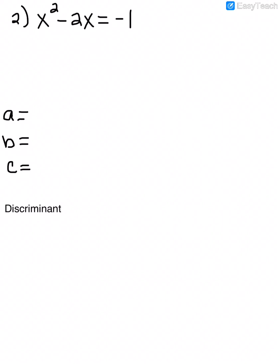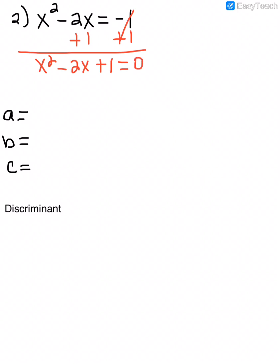Here's another one. This equation is not in standard form, so to get it in standard form, everything needs to be on one side in descending order. Moving the 1 over gives x squared minus 2x plus 1 equals 0. So a, the coefficient of x squared, is 1; b is negative 2; and c is positive 1.